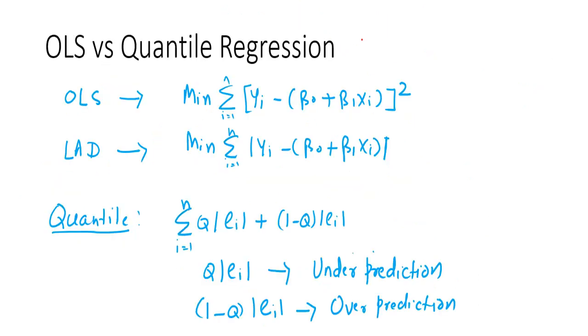So let's learn a bit about the theory of quantile regression and try to compare the OLS with the quantile regression. So what happens in OLS? We minimize the error, sum of square. And we find the optimal value of beta naught and beta one, which minimizes the sum of the error square.